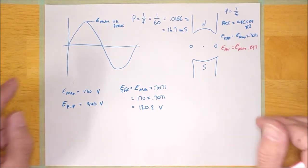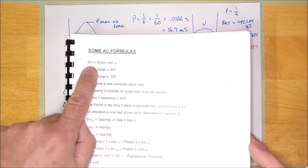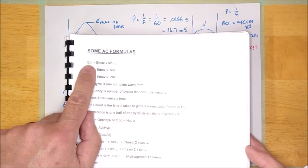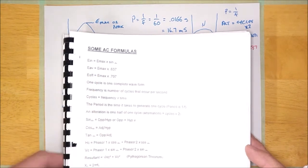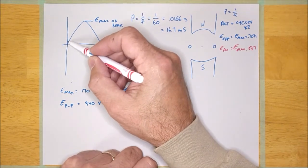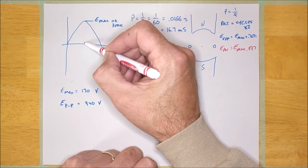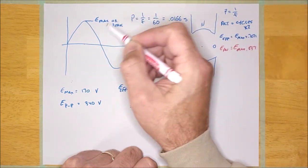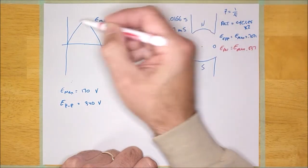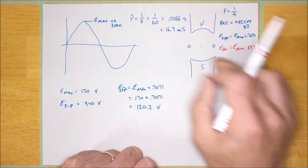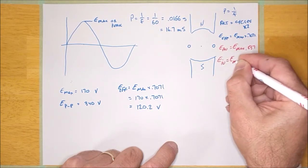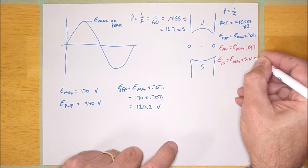One more thing — the last formula I want to talk about is this one: E instantaneous is equal to E max times the sine of the angle. The instantaneous voltage — at 0 degrees it's 0, at 90 degrees it's 170 volts let's say. But what about 30 degrees, 31 degrees, 41 degrees, 45 degrees? What's the voltage there? You can calculate that using that formula: E instantaneous equals E max times the sine of the angle.